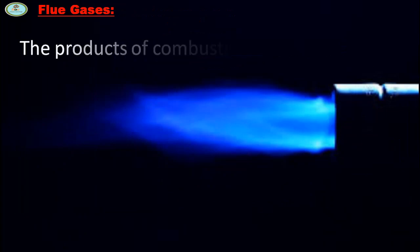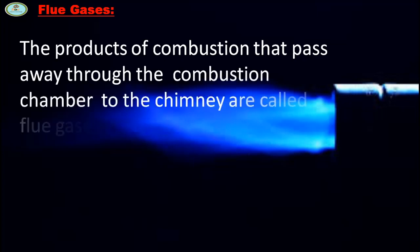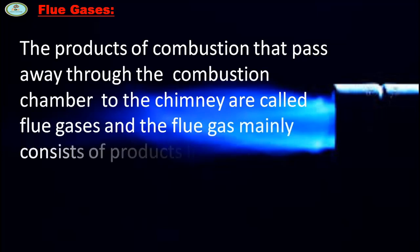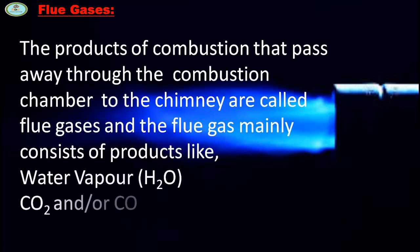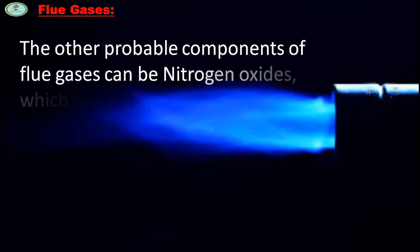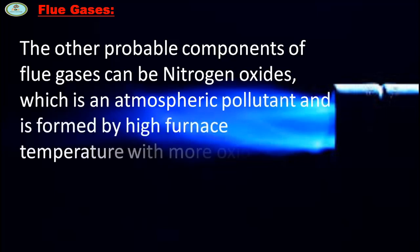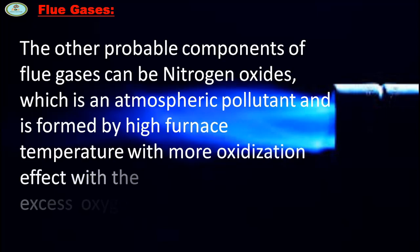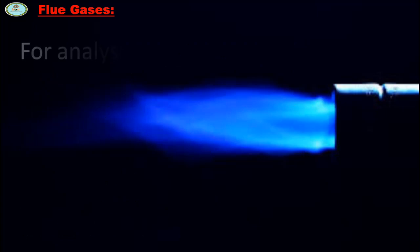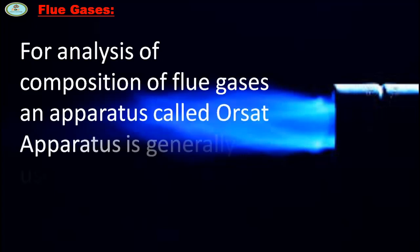The products of combustion that pass away through the combustion chamber to the chimney are called flue gases. The flue gas mainly consists of products like water vapor, CO2 and CO, and nitrogen. The other probable components of flue gases can be nitrogen oxide, which is an atmospheric pollutant and is formed by high furnace temperature with more oxidation effect with the excess oxygen supplied with combustion air. For analysis of composition of flue gases, an apparatus called Orsat apparatus is generally used in boilers.